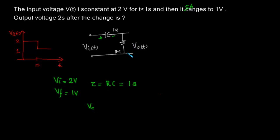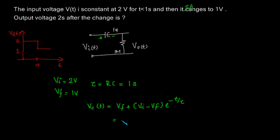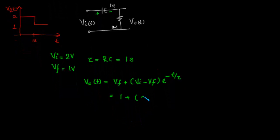We will first find out the voltage across the capacitor, vc(t). The equation for capacitor voltage as it discharges from 2 volts to 1 volt is: vc(t) = V_final + (V_initial − V_final) × e^(−t/τ). That gives us 1 + (2 − 1) × e^(−t/1), which simplifies to vc(t) = 1 + e^(−t).